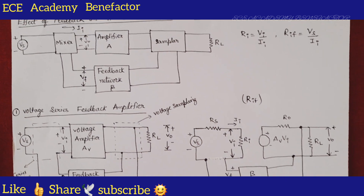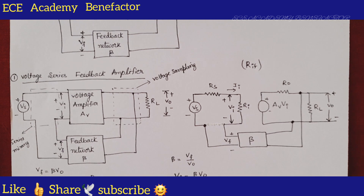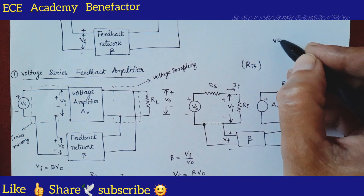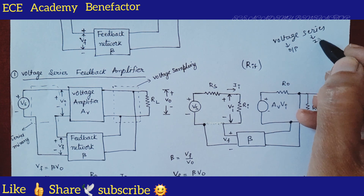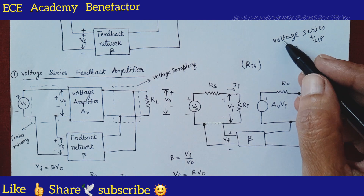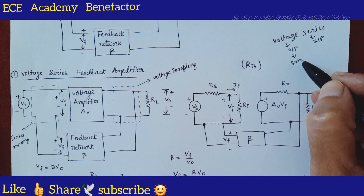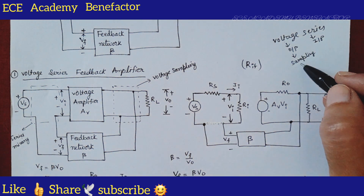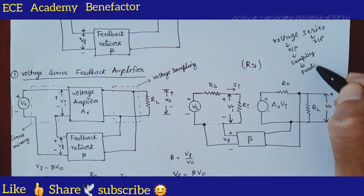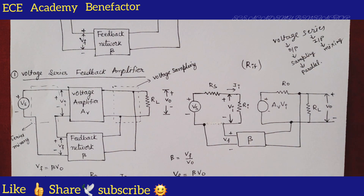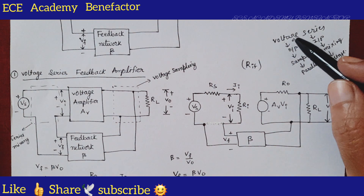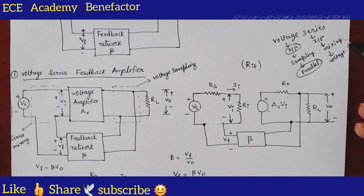Now let us see the voltage series feedback amplifier and how to draw it. In the name 'voltage series': the first word tells about the output and the second word tells about the input. So at the output, voltage sampling is done, which means a parallel connection. At the input, we have series mixing, which requires a voltage source.